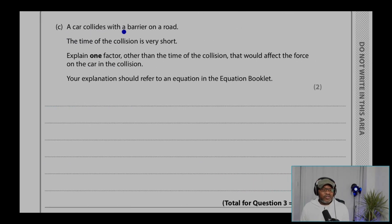Part C, a car collides with a barrier on a road. The time for the collision is very short. Explain one factor other than the time of the collision that would affect the force on the car in the collision. Your explanation should refer to an equation in the equation booklet.